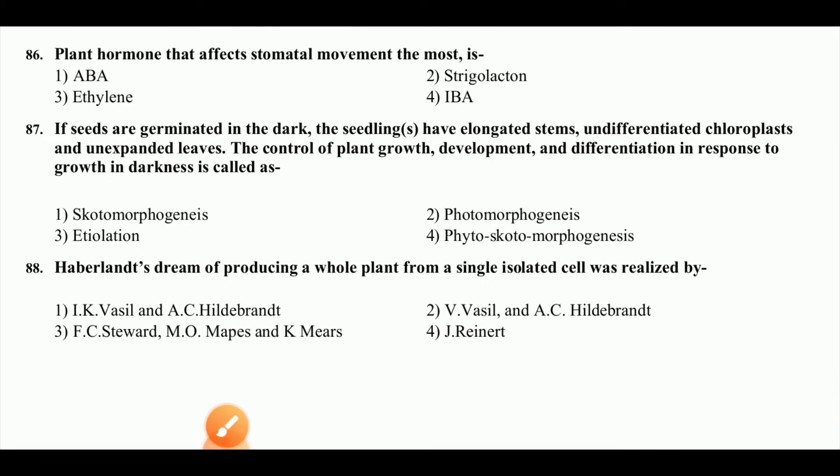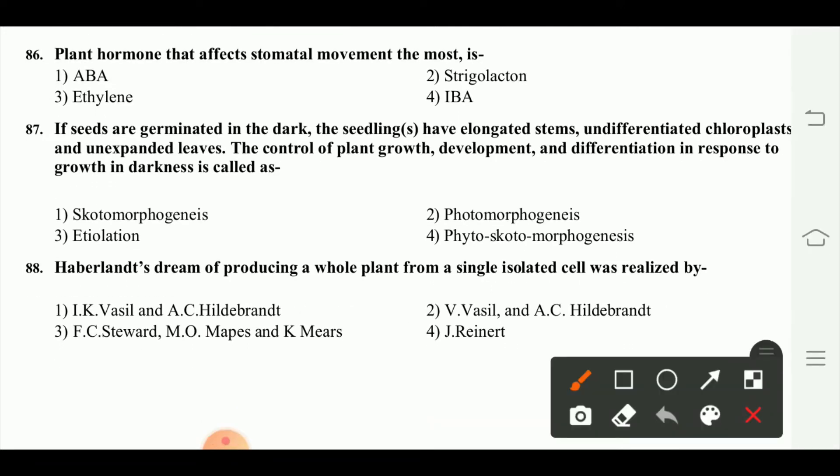The plant hormone that affects stomatal movement the most is abscisic acid (ABA). ABA hormone controls stomatal movement — you have to remember that.